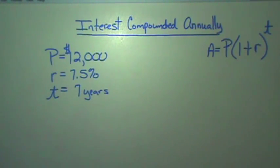I want to go over one type, which is interest compounded annually.